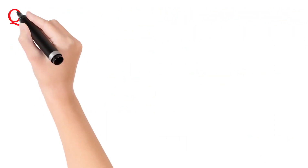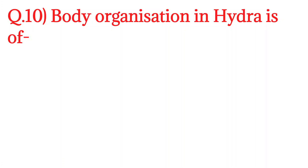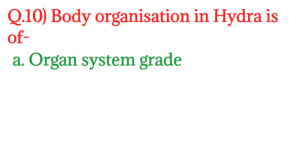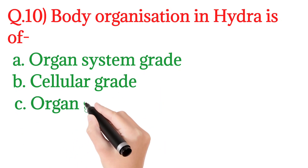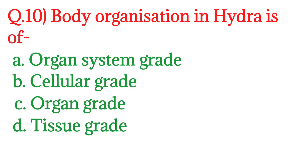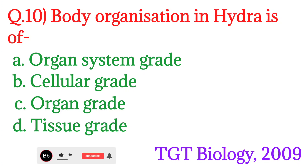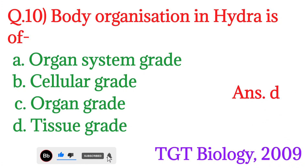Next question number 10: Body organization in Hydra is of — Hydra में शरीर संगठन होता है। Option A is Organ system grade, Option B is Cellular grade, Option C is Organ grade, and Option D is Tissue grade. यह question TGT Biology 2009 में पूछा गया था। इसका answer होगा Option number D — Tissue grade. Hydra में Tissue level organization पाया जाता है।